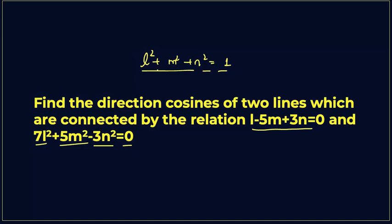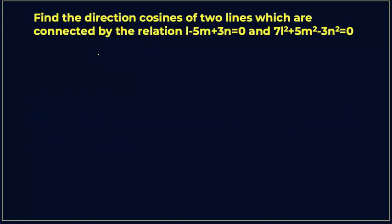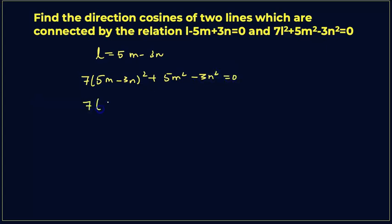First, we write l equals 5m minus 3n from the first relation. We substitute this into the second equation, replacing l with 5m minus 3n. So we write 7 times (5m minus 3n) squared plus 5m squared minus 3n squared equals 0, which expands to 7 times (25m squared plus 9n squared minus 30mn) plus 5m squared minus 3n squared equals 0.